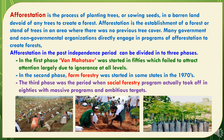What is afforestation? Afforestation is the process of planting trees or sowing seeds in barren land devoid of any trees to create a forest — that is, creating a forest on new lands. Afforestation is the establishment of a forest or a stand of trees in an area where there was no previous tree cover. Many government and non-governmental organizations directly engage in afforestation programs to create forests. Afforestation in the post-independence period can be divided into three phases: the first phase with Van Mahotsava started in the 1950s but failed due to ignorance at all levels; the second phase with farm forestry started in some states in the 1970s; and the third phase when the Social Forestry program actually took off in the 1980s with massive programs.